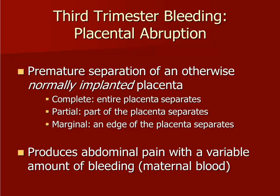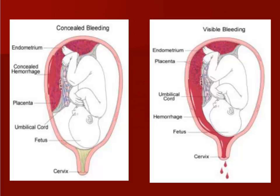In contrast to the painless vaginal bleeding that occurs with a placenta previa, an abruption is associated with significant abdominal pain and a variable amount of bleeding. Bleeding during an abruption varies because blood may be concealed behind the placenta and never come out through the vagina. Typically, however, some amount of vaginal bleeding occurs during a placental abruption.